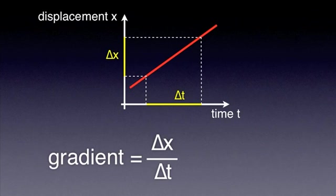But that's nothing else than the velocity, defined as displacement over time. So the gradient of a displacement-time graph gives us the velocity. Instantaneous velocity, to be more precise.